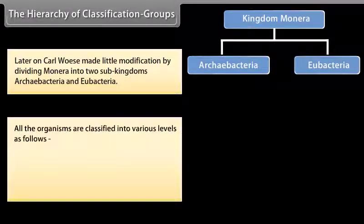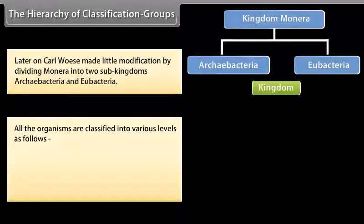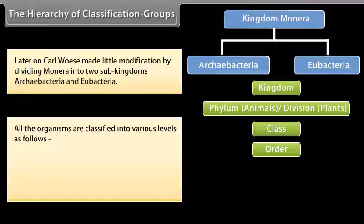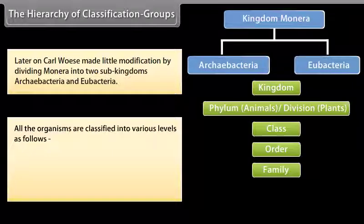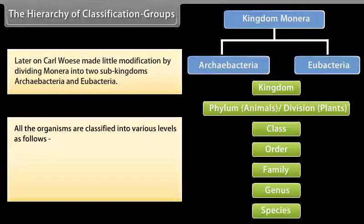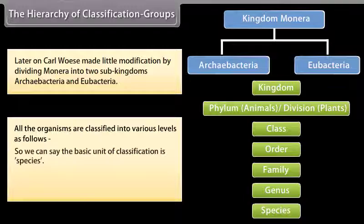All organisms are classified into various levels as follows: Kingdom, Phylum (for animals) / Division (for plants), Class, Order, Family, Genus, Species. The basic unit of classification is species.